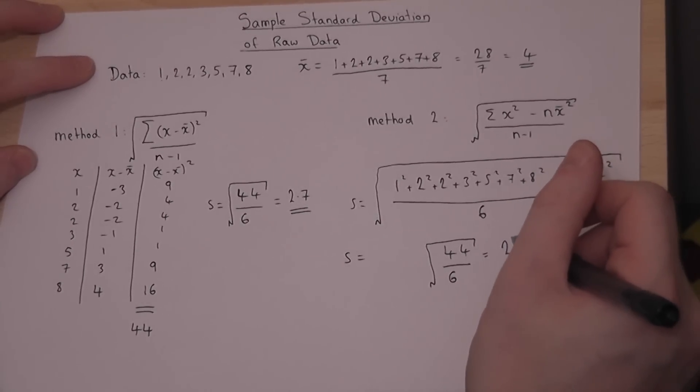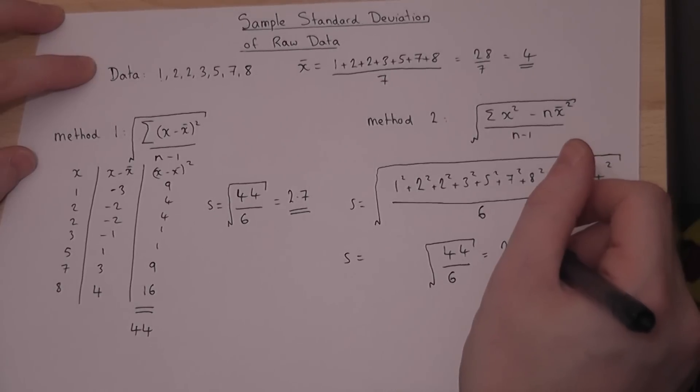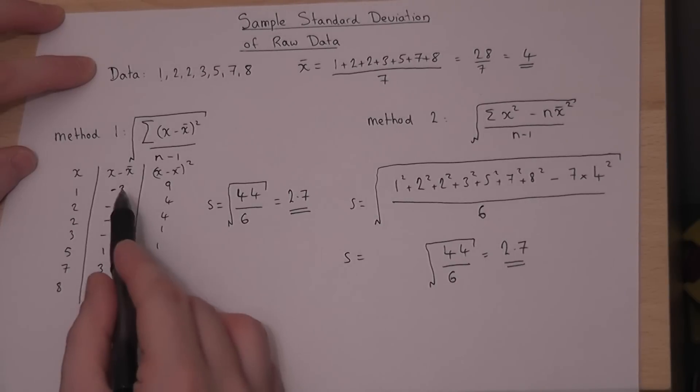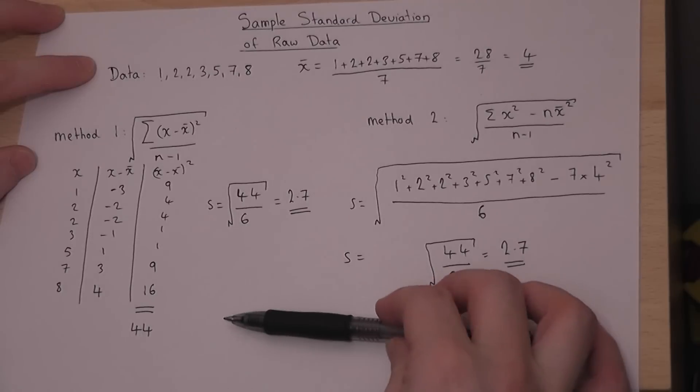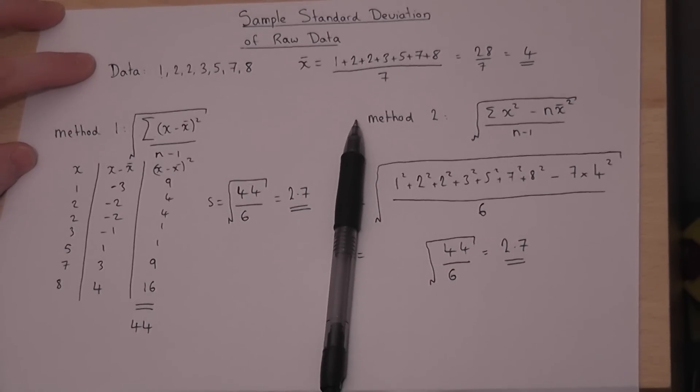Now, it's up to you which method you prefer. I personally prefer method 2, but method 1 arguably gets lower numbers to calculate, but it's entirely up to you which one you use.